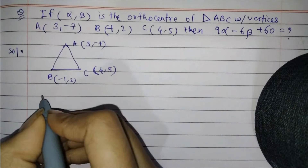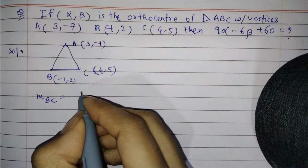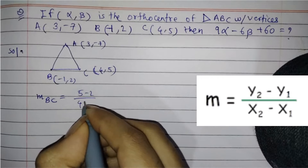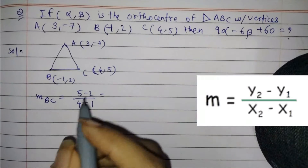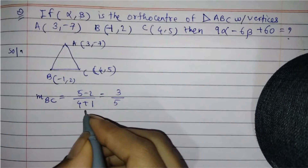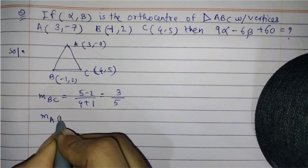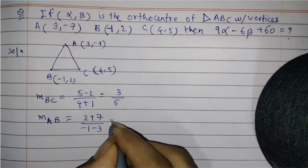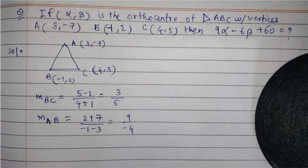First, let us find the slope of BC because we have these two coordinates. MBC is equal to — using the formula y2 minus y1 by x2 minus x1 — that gives 3 by 5. And let us find MAB as well: 2 plus 7 by minus 1 minus 3, which is 9 by minus 4, so minus 9 by 4.